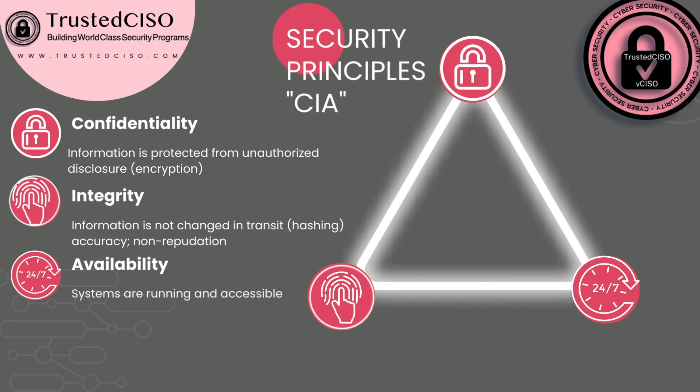For confidentiality, when talking about IT security controls, we're talking about encryption. But this could also be signing a non-disclosure agreement and making sure you don't leak out confidential information. For digital security, information is encrypted whether it's on your local hard drive or for any remote session — for example, you want to use TLS 1.2 or above.